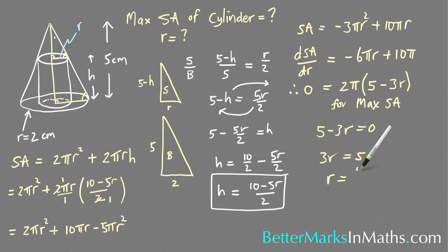And r equals 5/3. So that's the radius when the surface area is a maximum. And then subbing this into here.